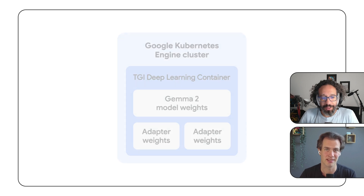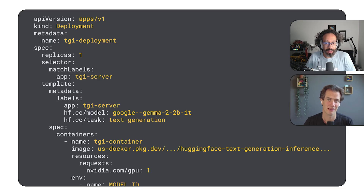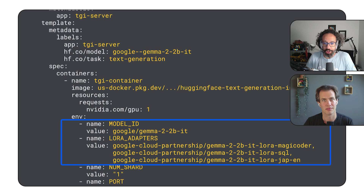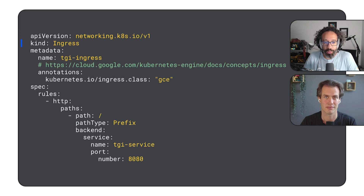Is there anything else people should know? First, let's look at some YAML files. We have the deployment.yaml file, which describes our deployments including the number of replicas, the container images we're using — in this case TGI — and any environment variables. This section is where we specify the Gemma 2 model and the LoRa adapter we want to deploy. Next, we have our ingress.yaml, which defines how our deployed container will be exposed to the outside world. It basically creates a load balancer so we can access our Gemma 2 model.